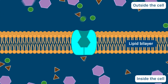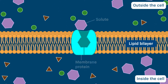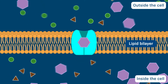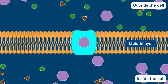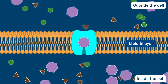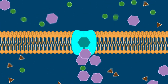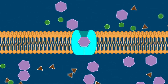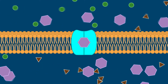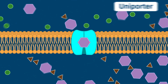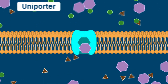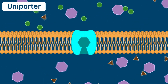Cells possess a variety of membrane proteins to carry solutes across the membrane. Carrier proteins bind to a solute and change shape as they shuttle the solute molecule from one side of the membrane to another. One type of carrier protein, called a uniporter, carries only one type of solute.